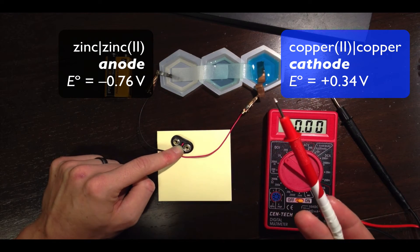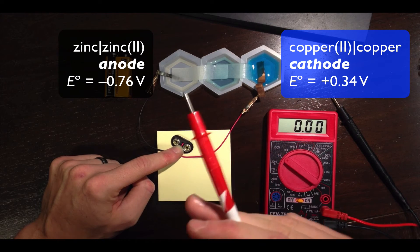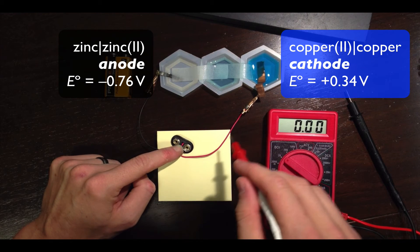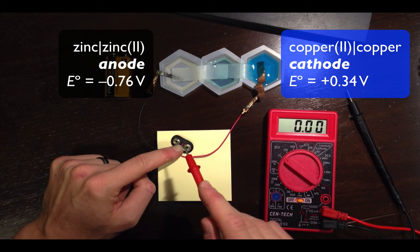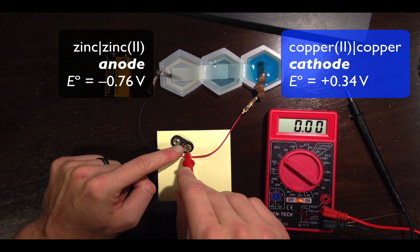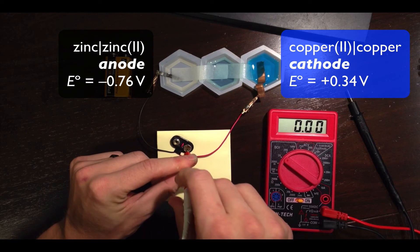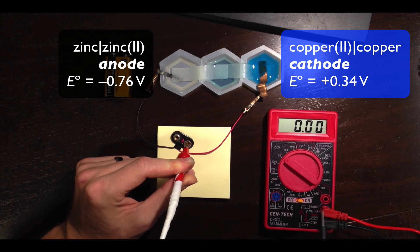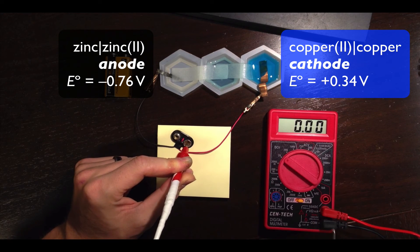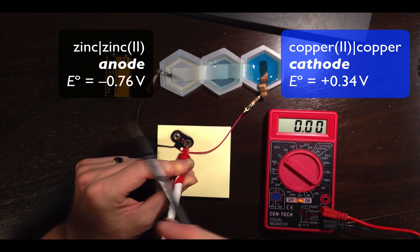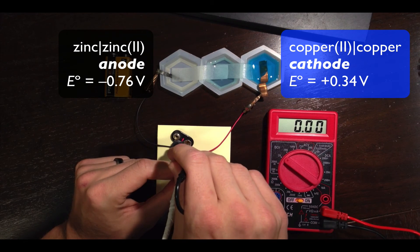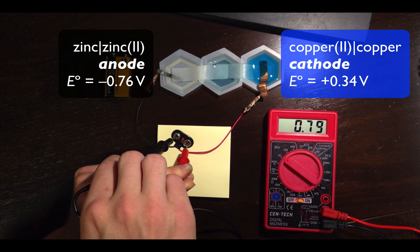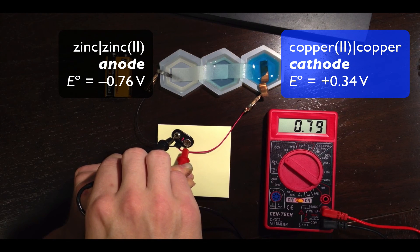When we connect the multimeter leads to observe a positive voltage, we need to connect the positive lead to the cathode. And so I've been strategic with the colors, but realize that the reason we're putting the red lead over here on the right is so that the red lead is connected to the cathode of the galvanic cell. The positive lead, note where it's plugged in, is connected to the cathode. The negative or common lead needs to be connected to the anode to observe a positive cell voltage. And sure enough, when we connect the multimeter leads in this way, we observe a positive cell voltage.